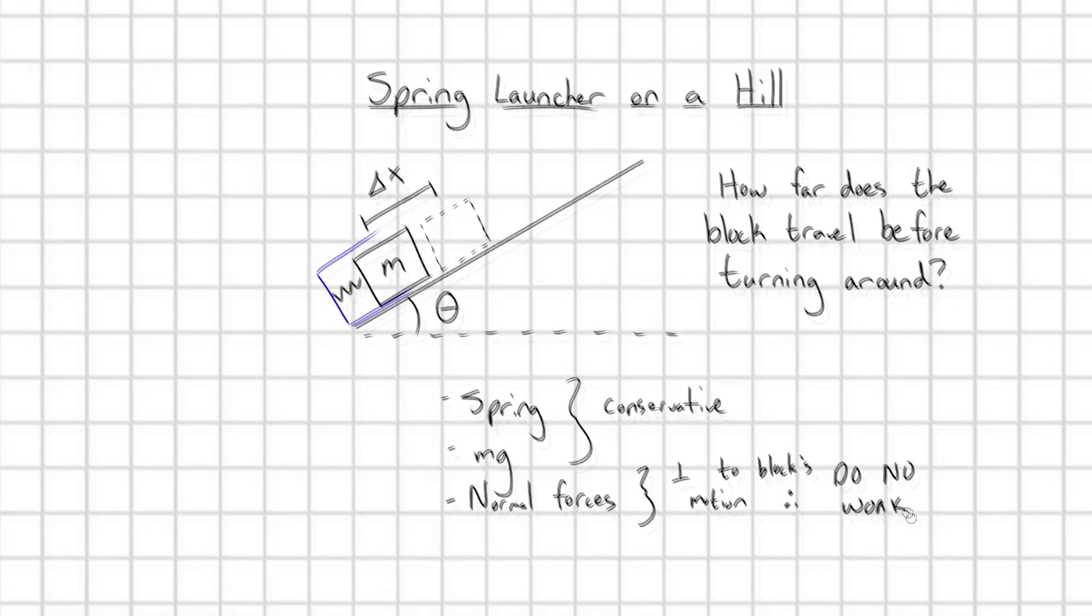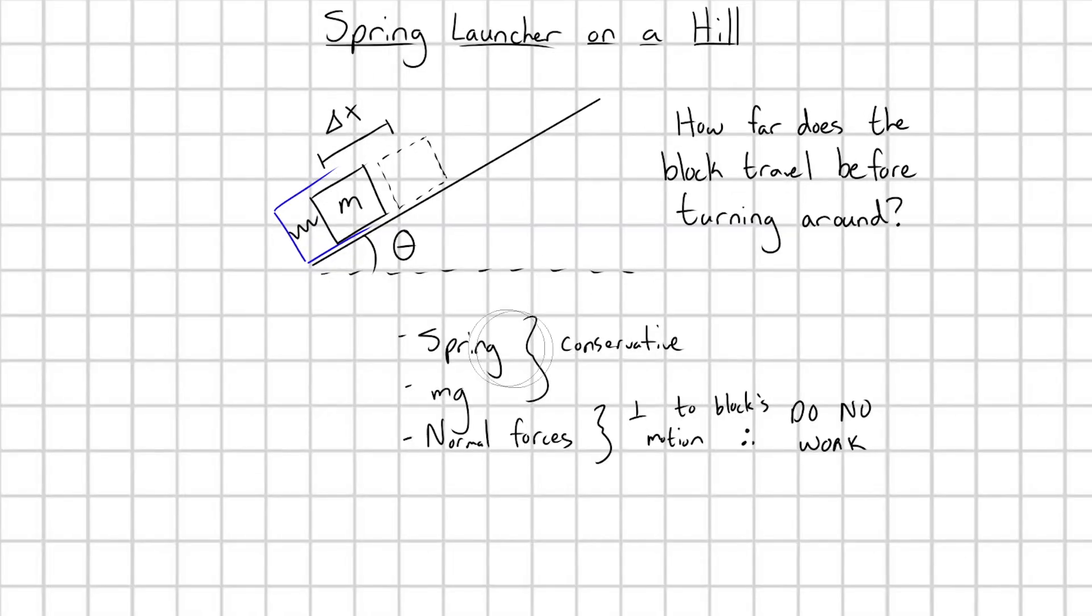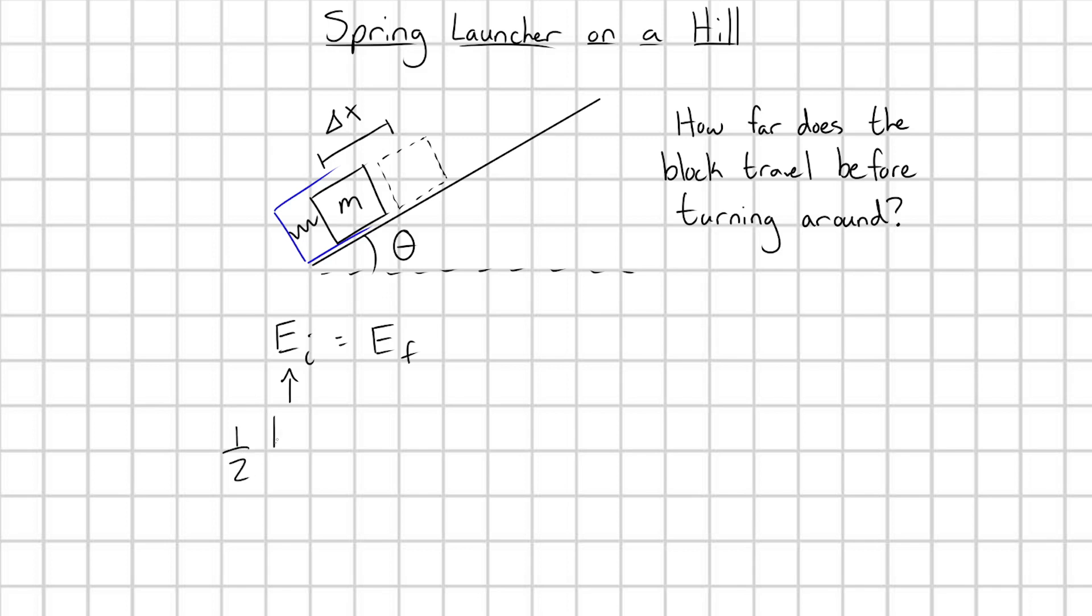So great, let's go ahead and do that directly. Let me erase these little notes here, and let's use the conservation of mechanical energy. So what's going on initially? Well, at first, the block is just compressing the spring. It's getting loaded into the launcher. All of its energy is going to be stored in this spring potential energy. So EI is going to be one-half times k times delta x squared.